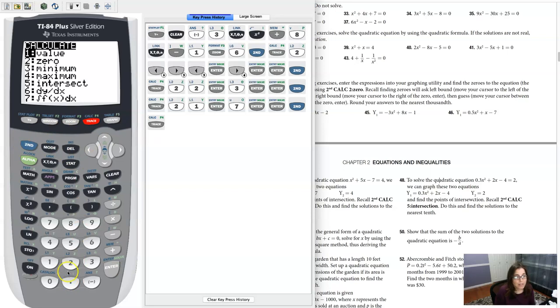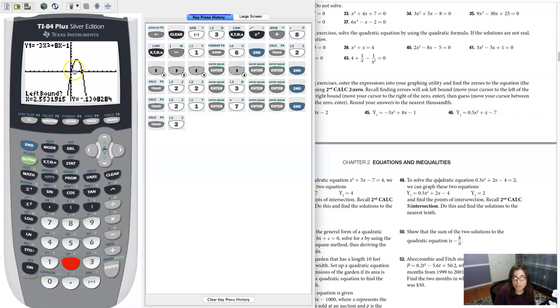One little caveat: don't pick something so far to the left that it gets in the way of this other x-intercept. I was saying I could pick 1 here. I don't really want to pick 0, because if I pick 0, it's so far to the left it's going to confuse the calculator, and it's not going to know which one to go after.